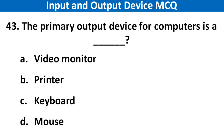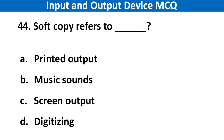Next question: The primary output device for computers is. Right answer is option A: Video monitor. Next question: Soft copy refers to. Right answer is option C: Screen output.